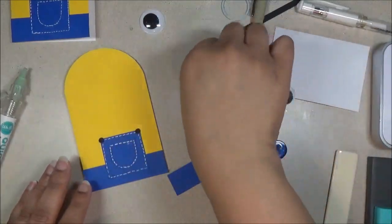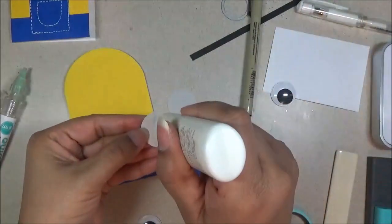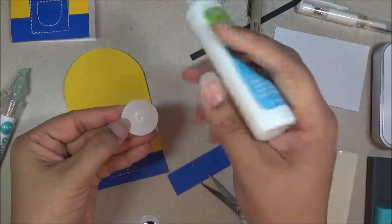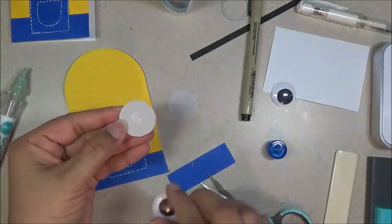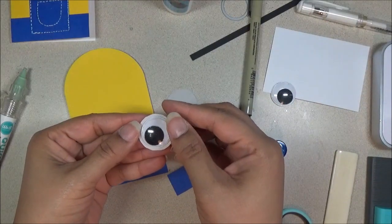Okay. And then we'll just go ahead and start gluing the eyes onto the little circle and set that aside to dry and try to center it as best as you can.